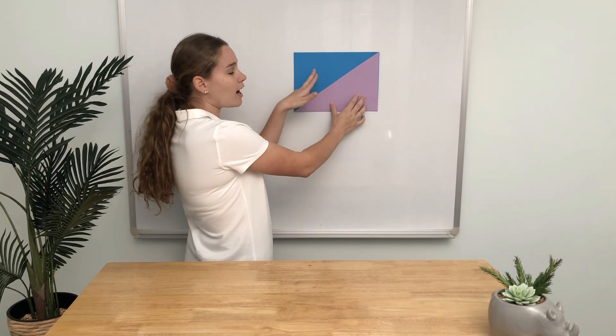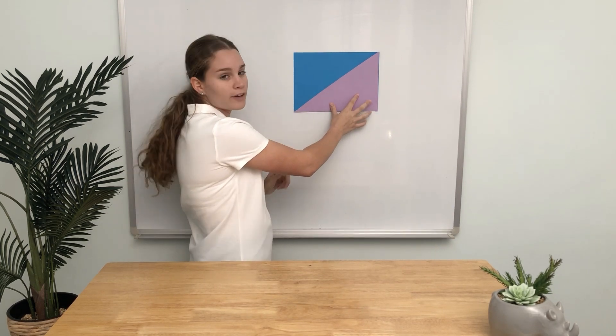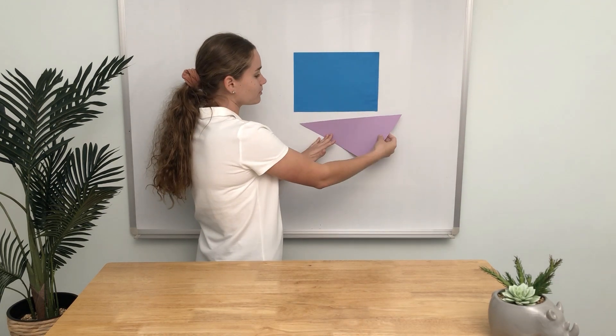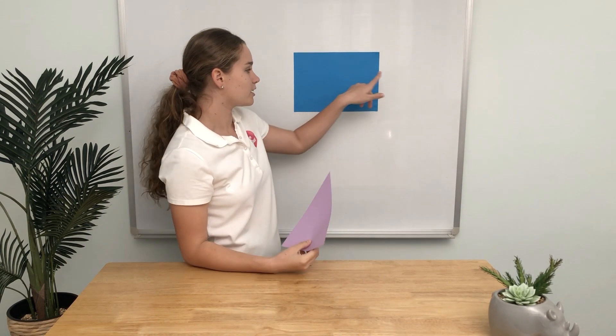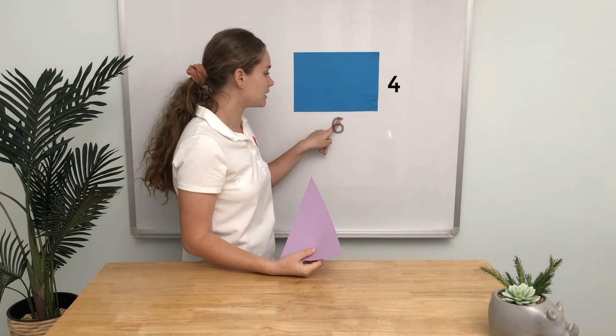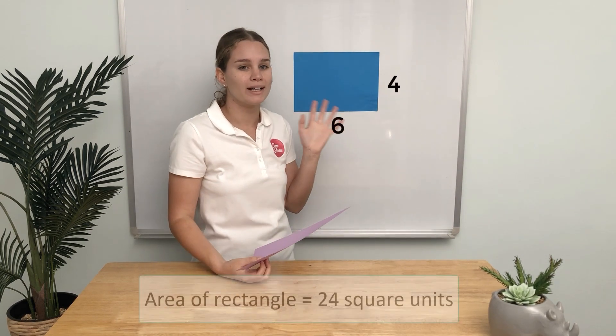The triangle is half the size of the rectangle. If this rectangle was 4 by 6, it would be 24 square units, and the triangle would be 12 square units because it's half.